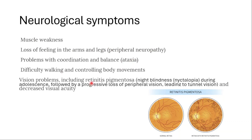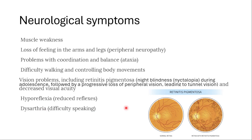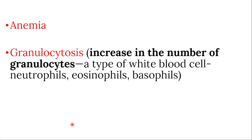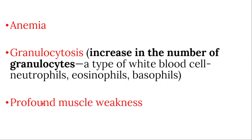Vision problems can also occur, including retinitis pigmentosa. In retinitis pigmentosa, we see night blindness during adolescence, followed by a progressive loss of peripheral vision leading to tunnel vision and decreased visual acuity. Other symptoms include hyporeflexia (reduced reflexes), dysarthria (difficulty speaking), and head tremor known as titubation. On the hematological side, we can see anemia and granulocytosis — an increase in the number of granulocytes, a type of white blood cell including neutrophils, eosinophils, and basophils — as well as profound muscle weakness.